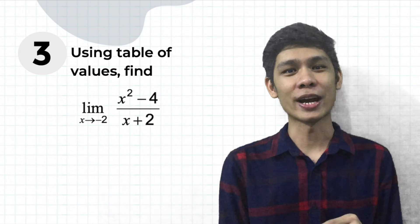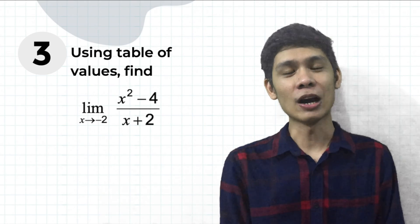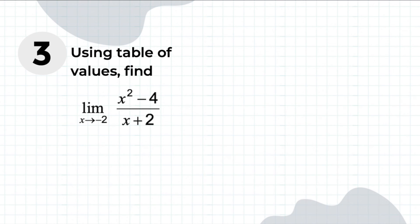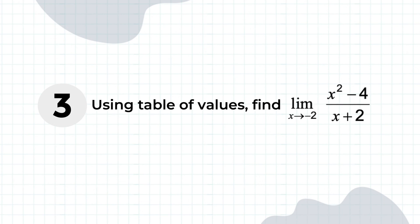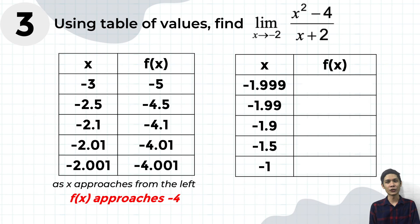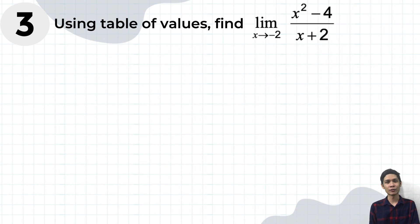Now that we're done with the first two examples, I want you guys to try it out. Please pause the video and try solving for the limit of the function as X approaches negative 2. Now let's see if you get the correct answer. The answer for example number 3 is, the limit of the function as X approaches negative 2 is negative 4.